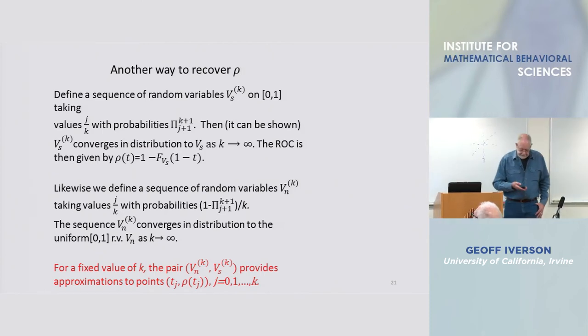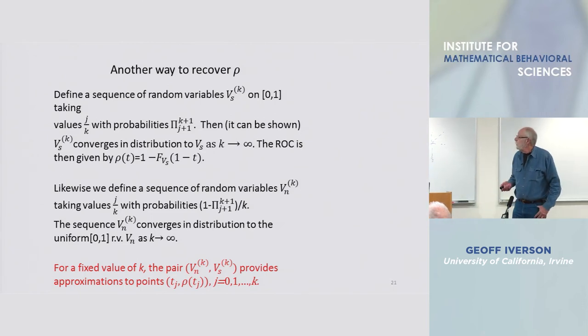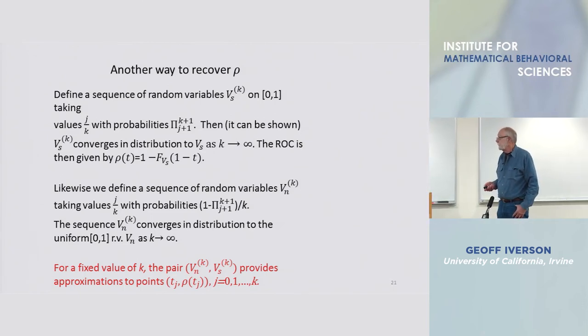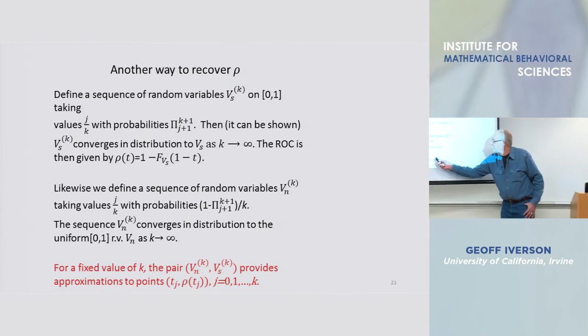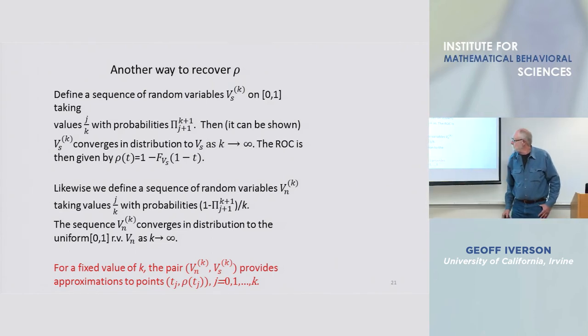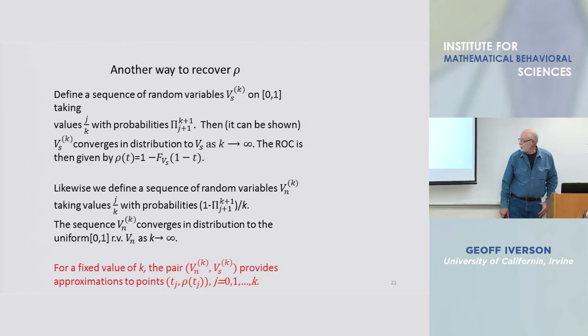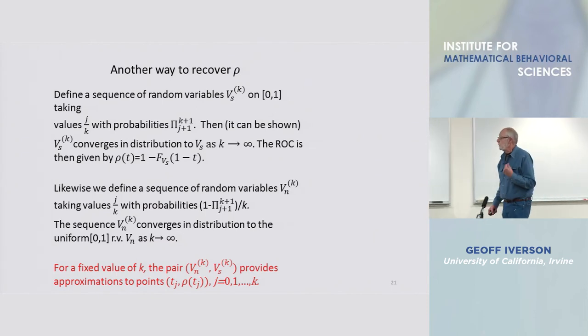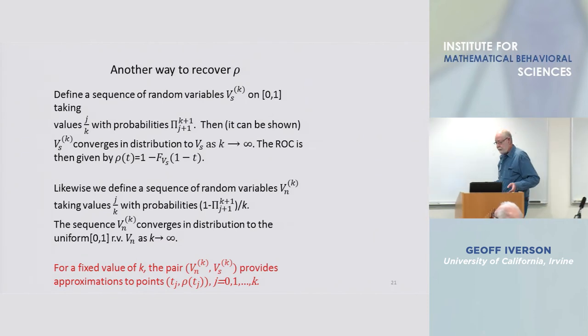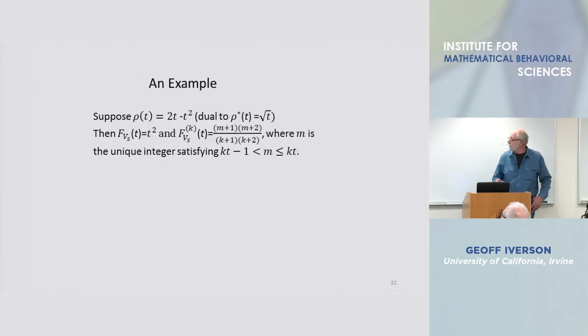And we can also do something similar with the noise. So for a fixed value of k, the pair V_nk, V_sk provides an approximation to a single point on the ROC.